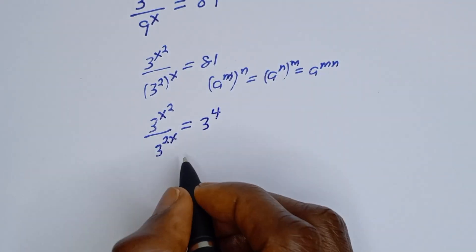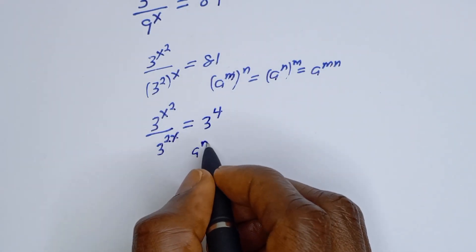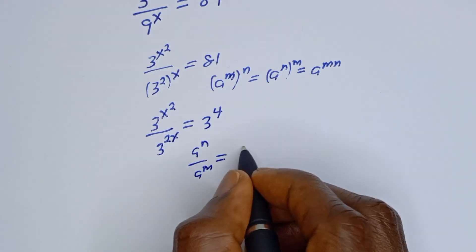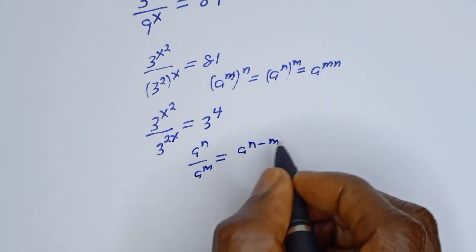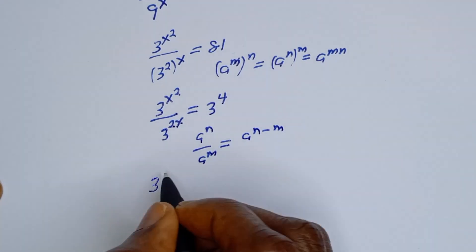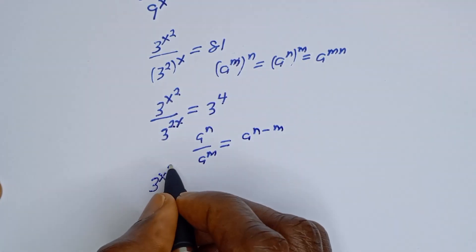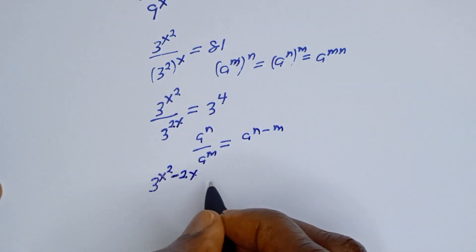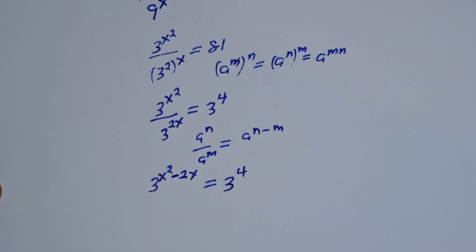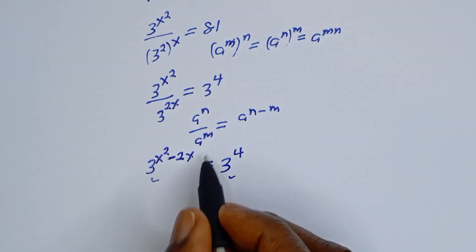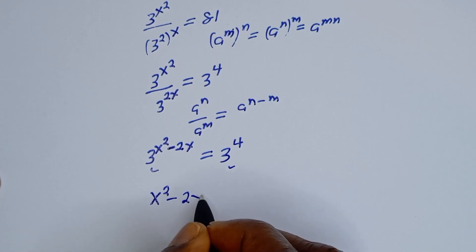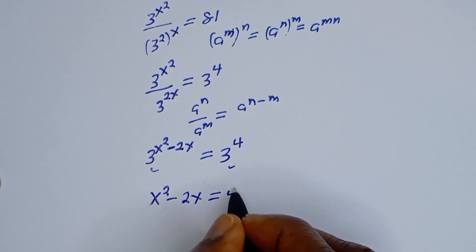Now, if you have a to the power of n over a to the power of m, this is equal to a to the power of n minus m. Then this can be written as 3 to the power of x squared minus 2x is equal to 3 to the power of 4. Since we have the same base, we consider the exponents: x squared minus 2x is equal to 4.